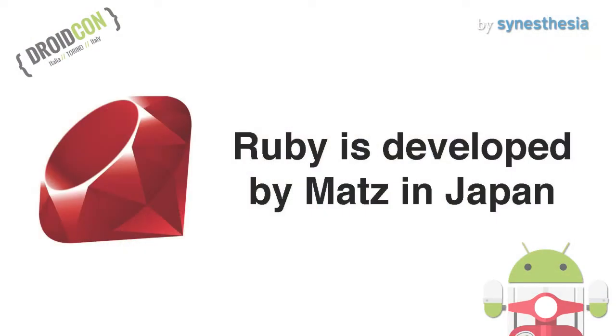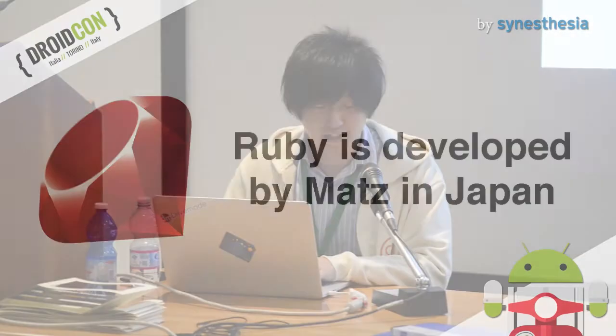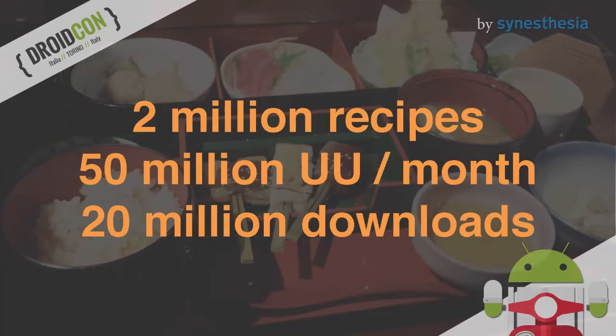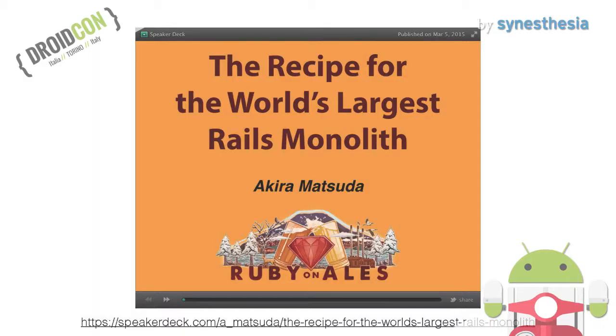Ruby programming language is developed by Matz in Japan, so Ruby on Rails is popular in Japan. Our service, Cookpad, is a recipe sharing service built almost entirely in Ruby on Rails. There are two million recipes and 50 million unique users. The Cookpad app is downloaded over 20 million times in Japan. The backend is described in the slide as the recipe for the world's largest Rails monolith. If you are interested in large monolithic architectures, see the slides.